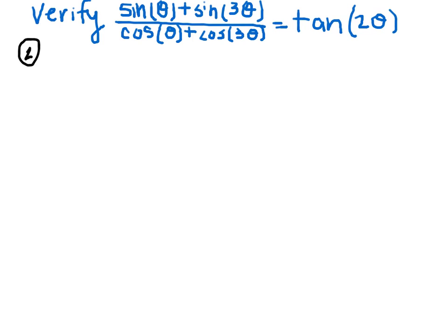So again, we want to work with the side that we can do more to, so that's the left side. We want to simplify the left hand side because we only have tangent on the right, tangent of 2 theta. So how can we combine the numerator and the denominator into one term? We're going to work with the sum-to-product formula.